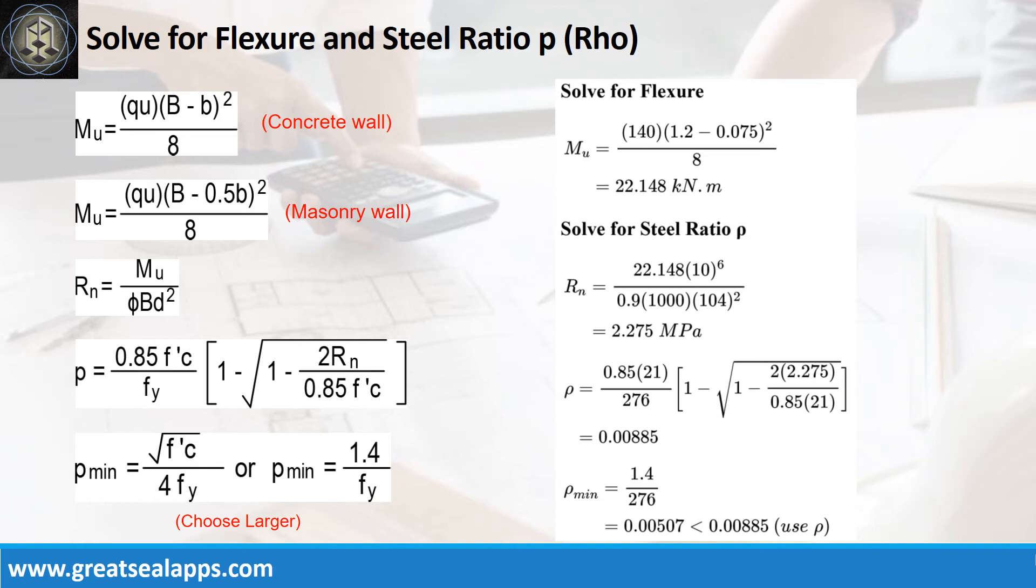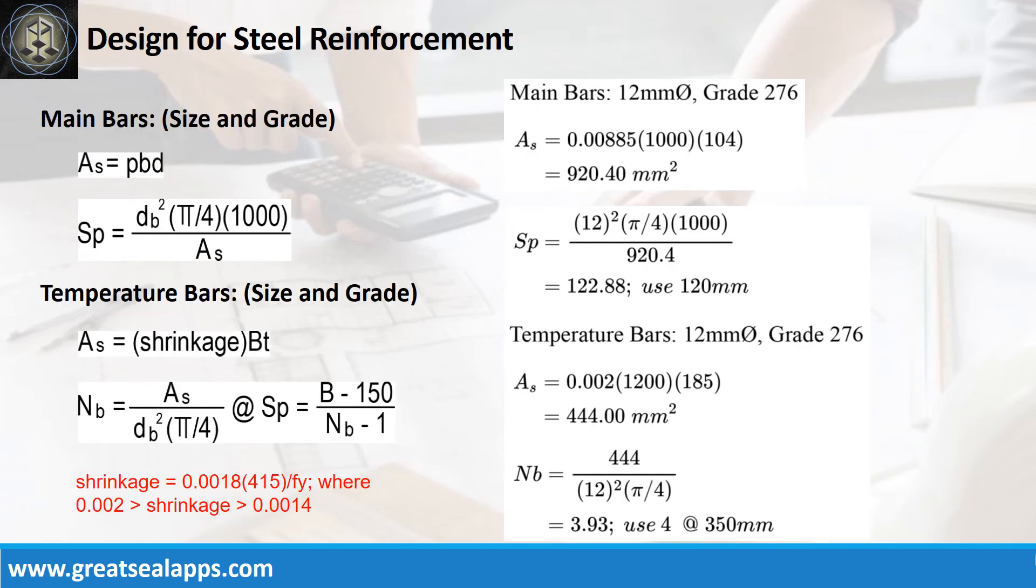The area of steel for main bars is 920.4 square millimeters, and the spacing for 12mm bar is 120mm.